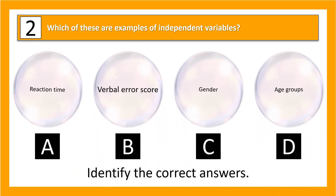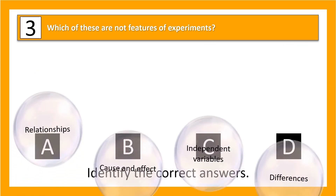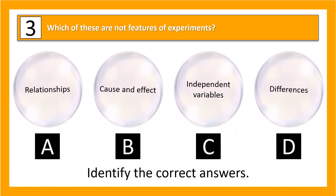Next: which might be examples of independent variables? We've got reaction time, verbal error score, gender, and age group. Take a moment to think about this. The answers are gender and age group.